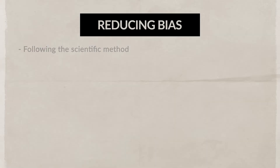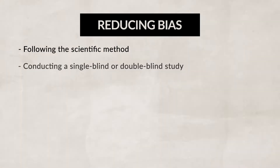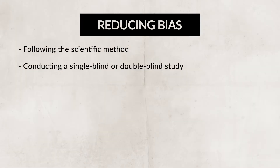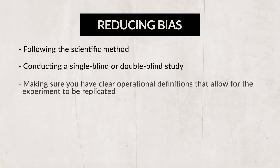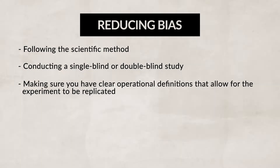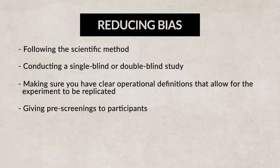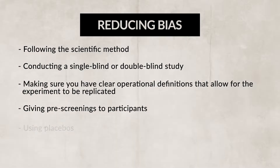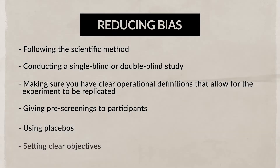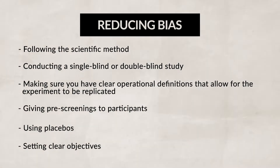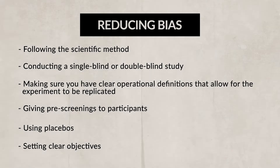There are a variety of different things that can be done to try and limit and mitigate bias from impacting the results of a study. Things like following the scientific method, conducting a single blind study or a double blind study, making sure you have clear operational definitions set that allow for the experiment to be replicated, giving pre-screenings to participants, using placebos, and setting clear objectives — all help reduce the amount of bias that could impact the study and make it so our results are more accurate.